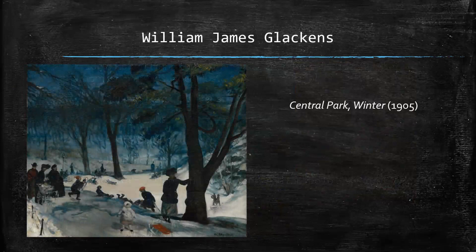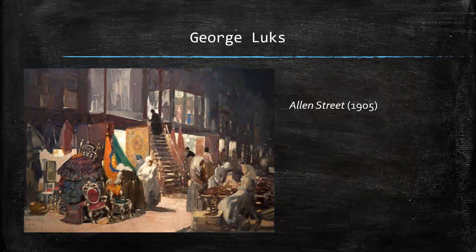Here we have an example of William James Glackens' work — this is Central Park Winter from 1905. Broad brushstrokes, a very impressionistic scene, although perhaps a little bit more detail in the foreground than you would normally see. This is a great one by George Luks called Allen Street from 1905, a lovely scene of market life in the city — a lower-class, immigrant setting. You wouldn't see many lords or ladies going through this area.